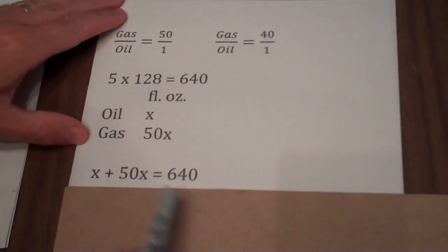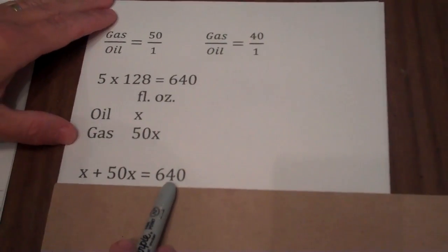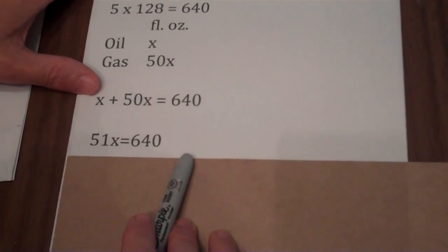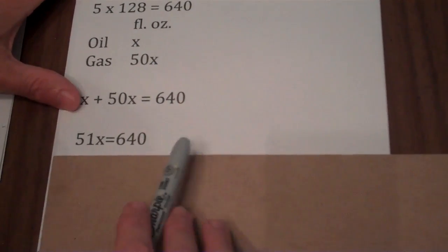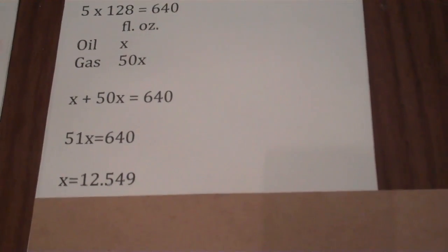Now if I add those two together, my x and my 50x, that gives me the total fluid ounces of 640. So 51x equals 640, dividing both sides by 51 leaves me with x equals 12.549.